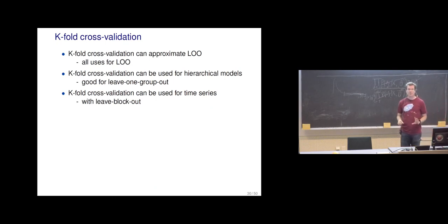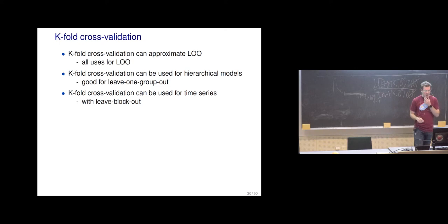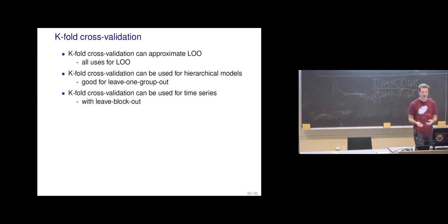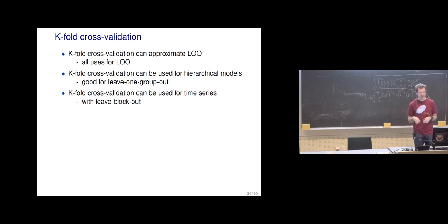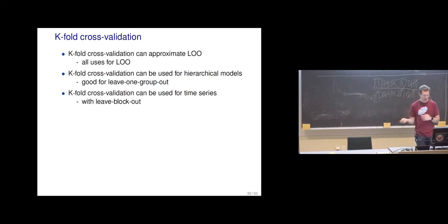K-fold cross-validation is simpler: instead of leaving just one observation out, we leave a block of data out. It's still possible to approximate something similar to leave-one-out, but it's also specifically useful if we have hierarchical models — good for leave-one-group-out or leave-several-groups-out, and also for time series.